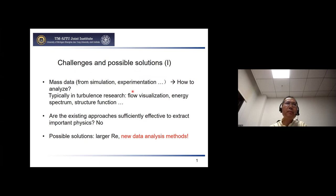We do a lot of simulation or experimentation, and therefore produce a lot of data. The key point is how to analyze those data. For instance, in turbulence we do flow visualization, spectrum, structure functions, and so on. The question is whether this approach is sufficiently effective to extract the physics we want — sometimes it may be okay, but sometimes not, and I will show examples of why not.